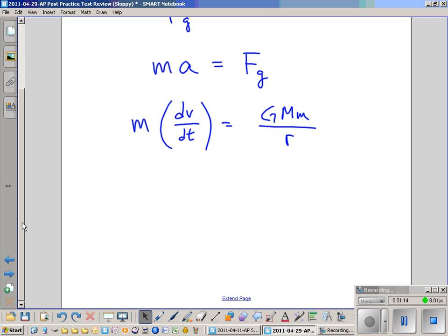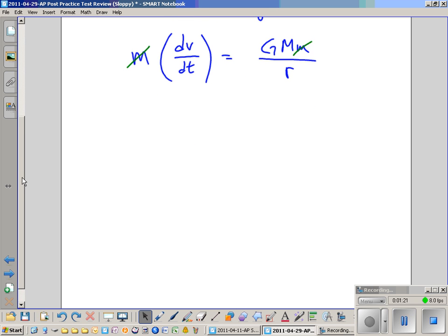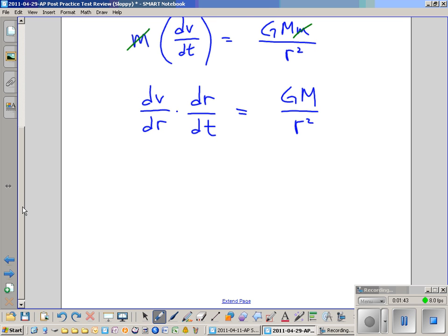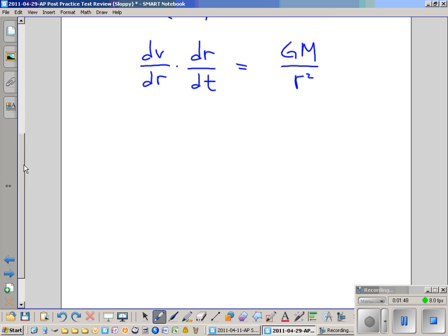Nice and neat, masses cancel out real quickly so we don't have to carry them throughout the entire operation. So now what we're going to do is a little bit of chain rule action. We're going to say dv/dt is equal to dv/dr times dr/dt. That's equal to GM over r squared. The purpose of that is to set up a differential equation that we can integrate.